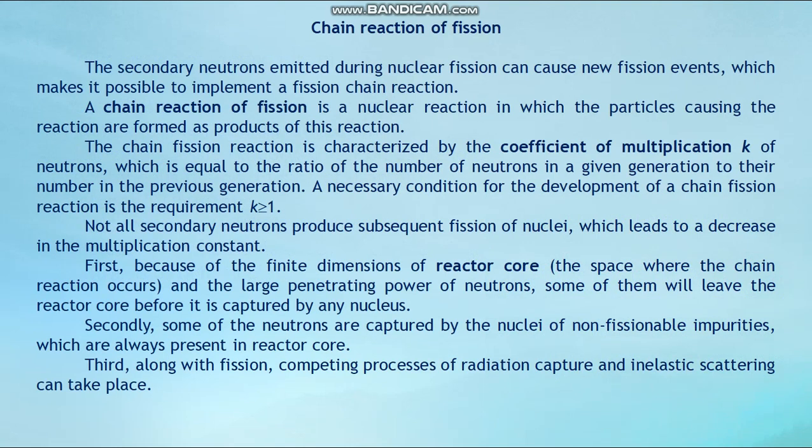The secondary neutrons emitted during nuclear fission can cause new fission events, which makes it possible to implement a fission chain reaction. A chain reaction of fission is a nuclear reaction in which the particles causing the reaction are formed as products of this reaction. The chain fission reaction is characterized by the coefficient of multiplication k of neutrons, which is equal to the ratio of the number of neutrons in a given generation to the number in the previous generation.